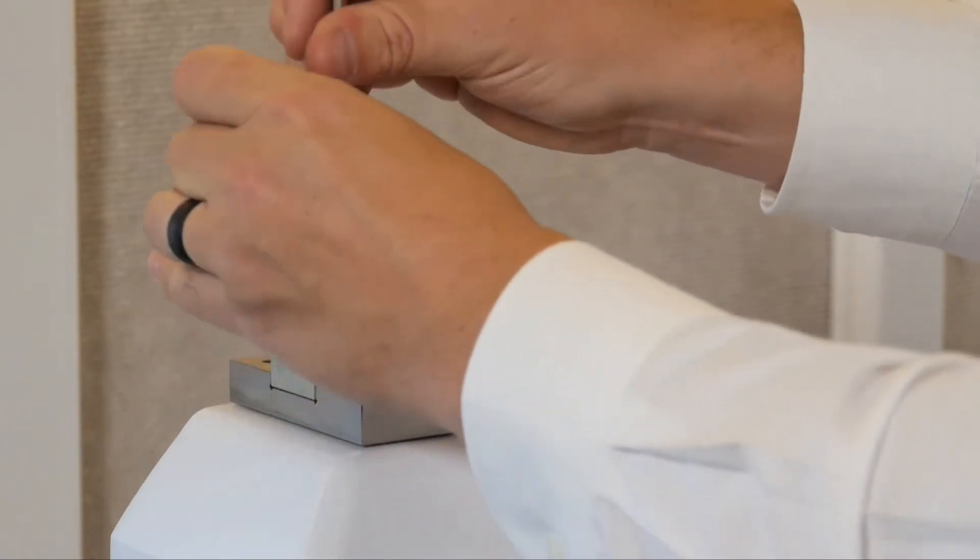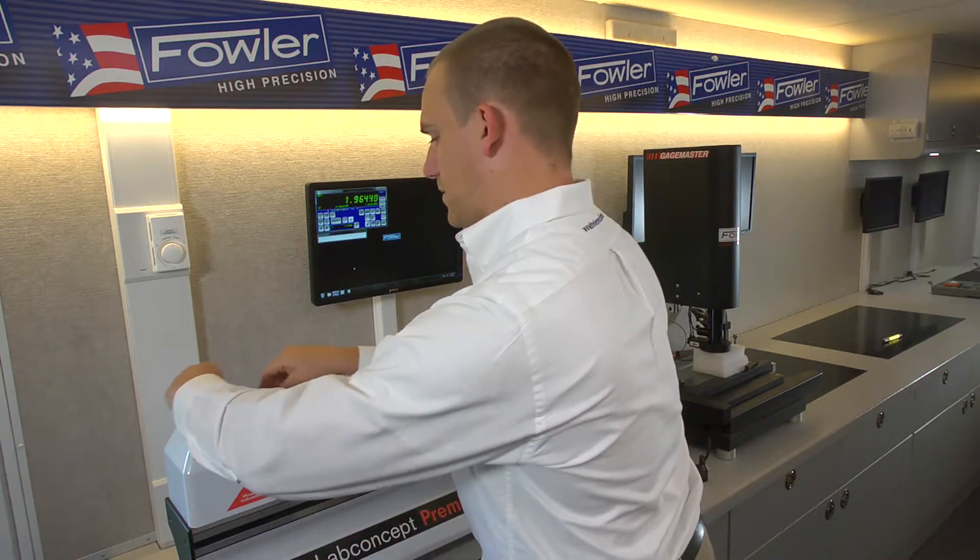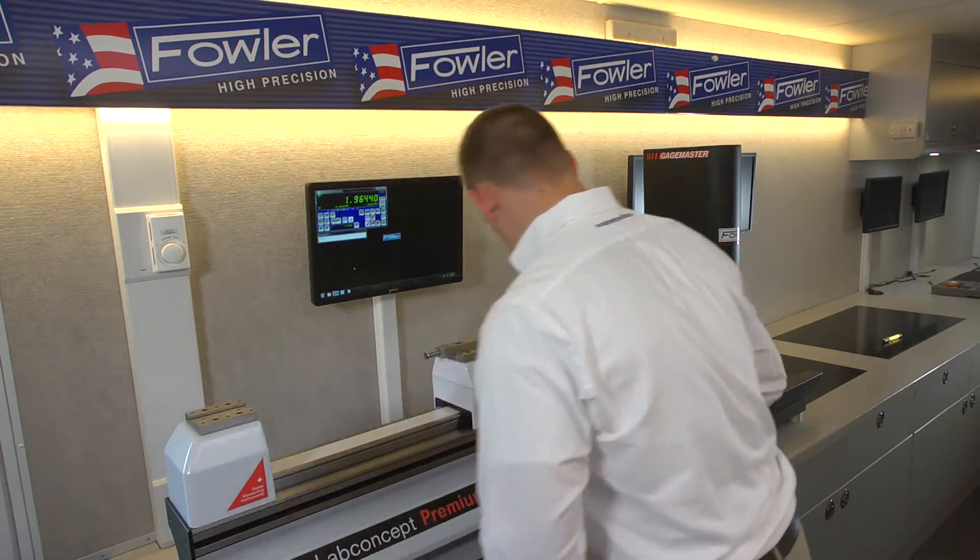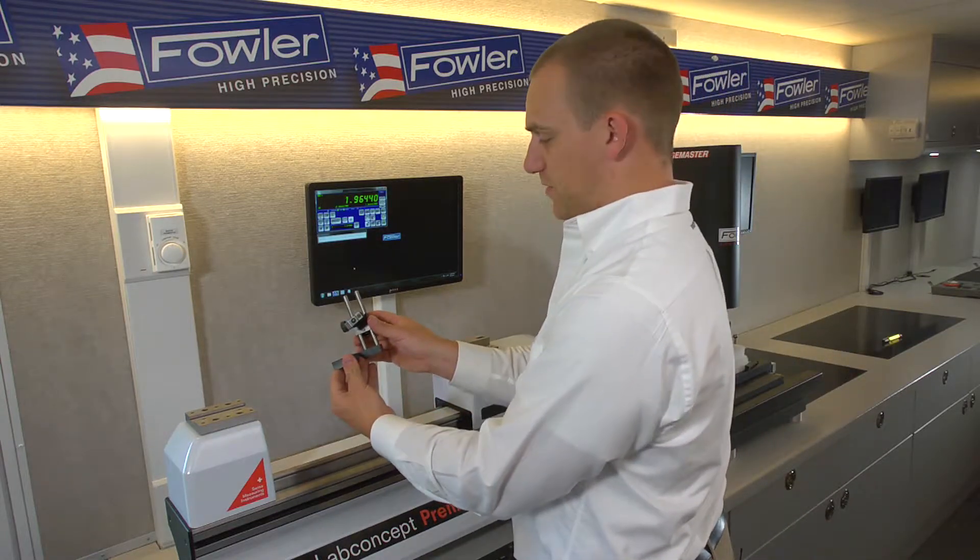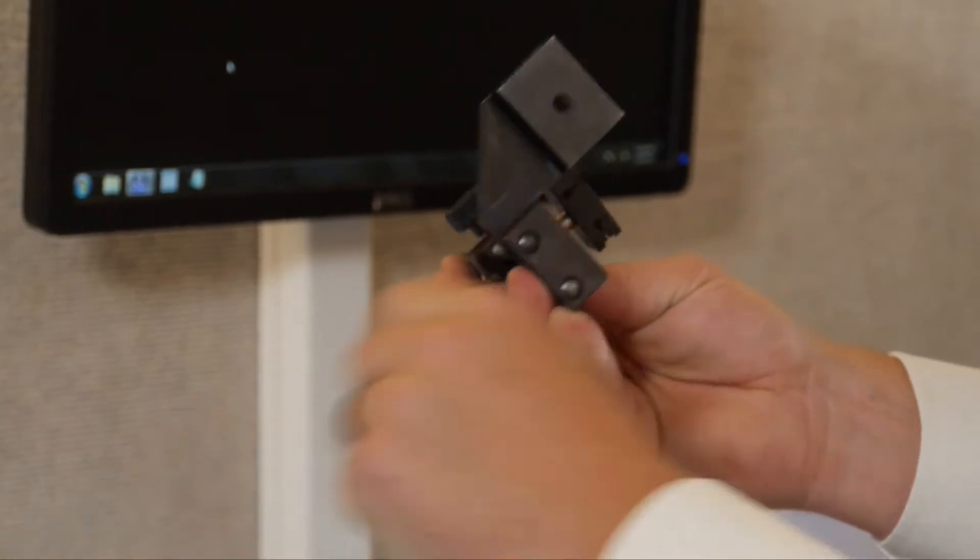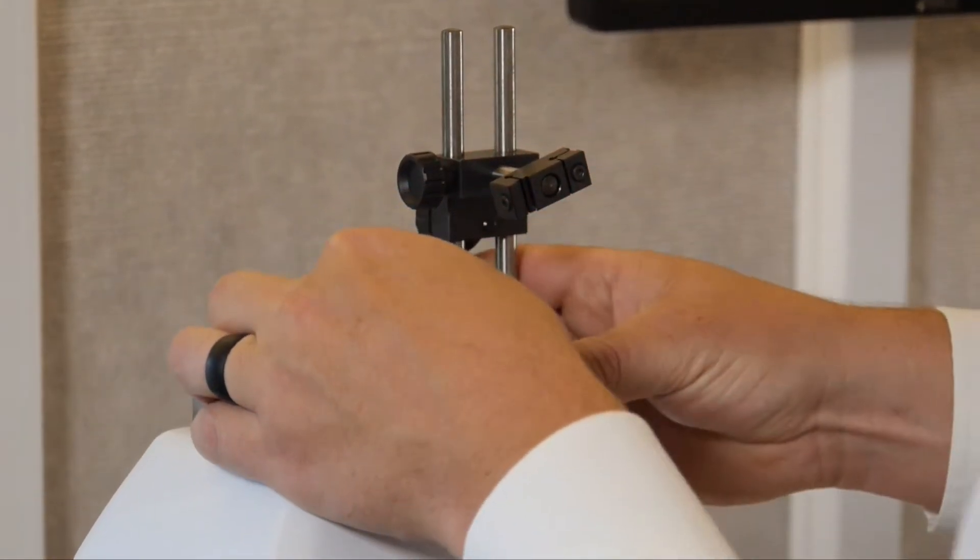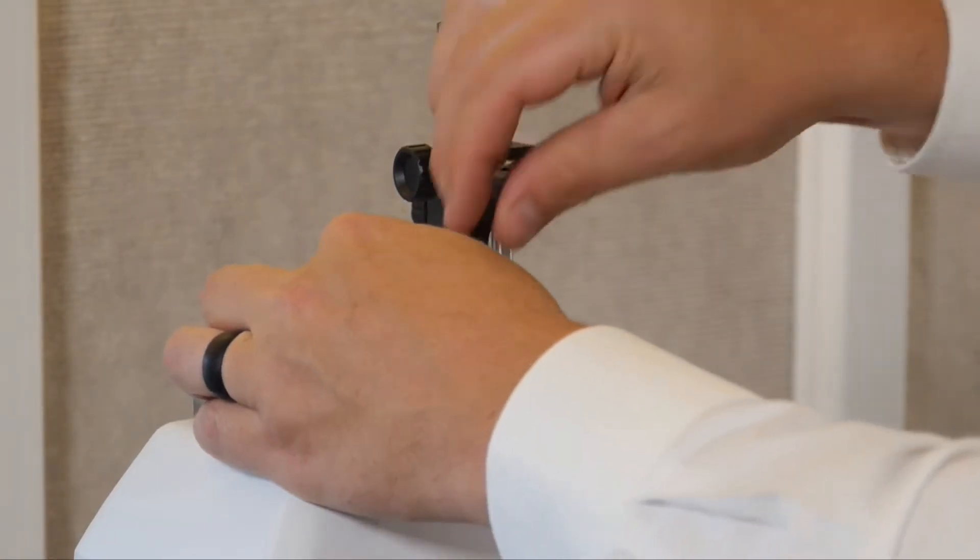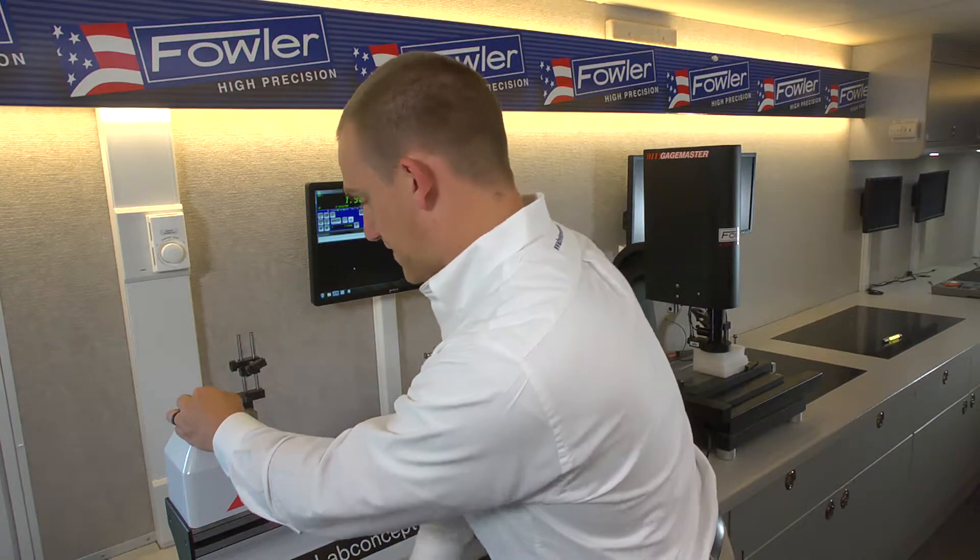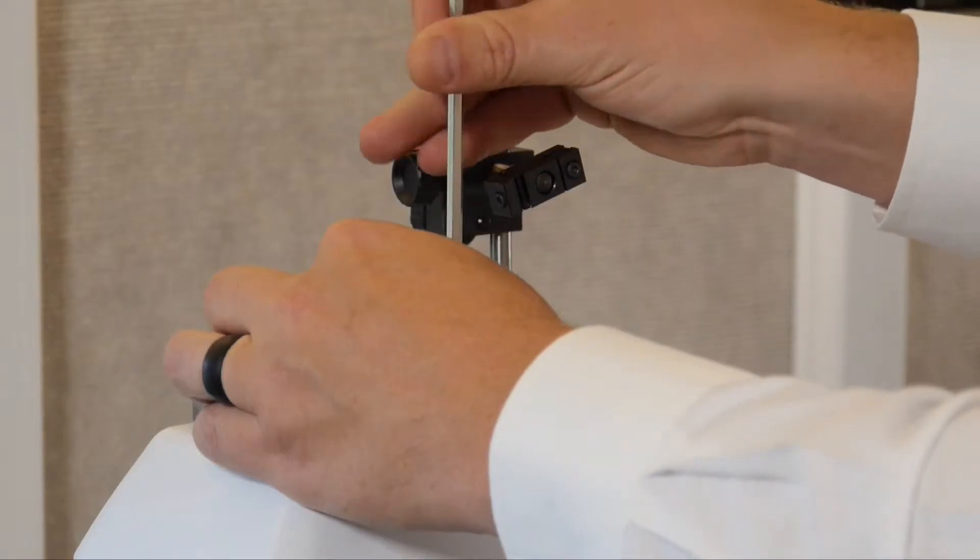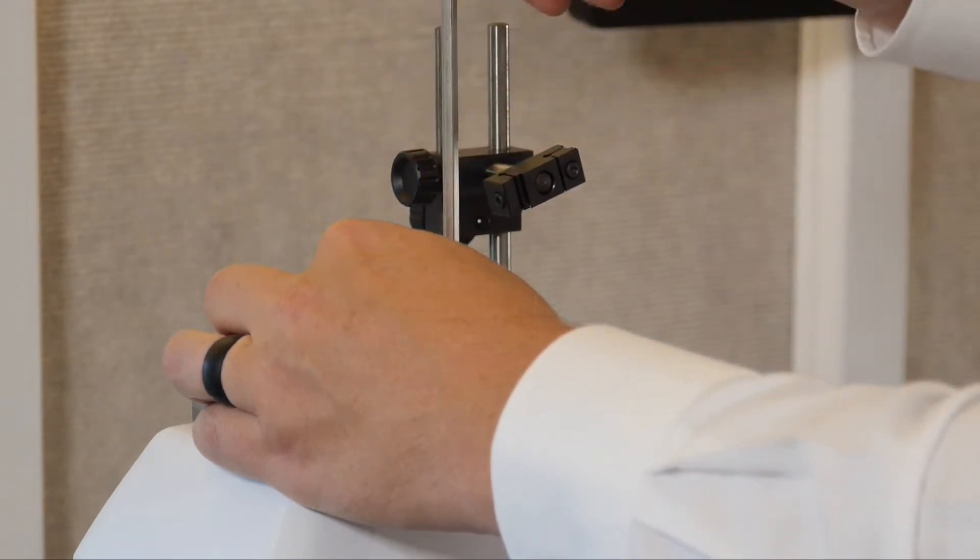We'll pull these screws right out and then we have our fixture for holding test indicators here. You can see there's this block which fits in place of the anvil. Use one of the same screws to fasten that in place and make sure it's good and snug.